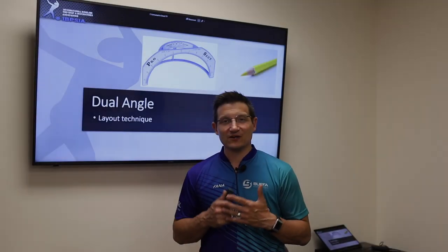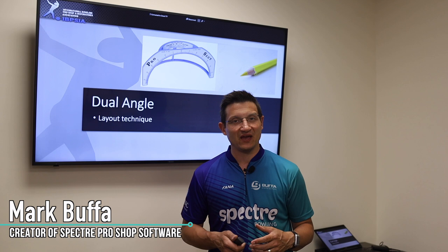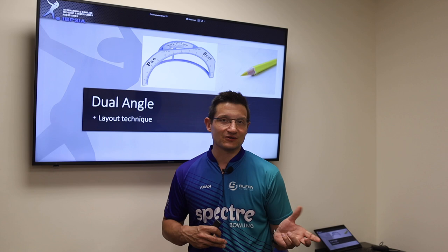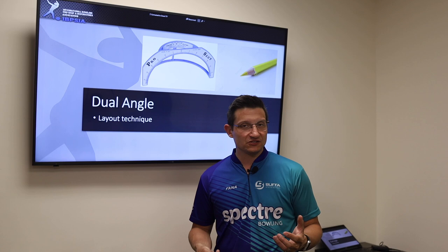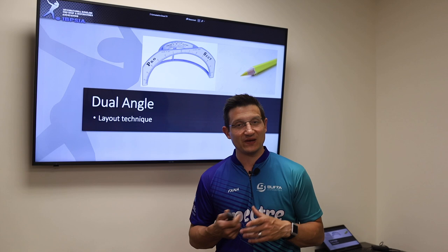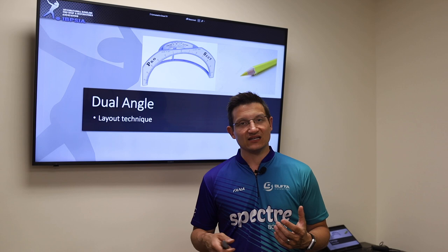Next up we're going to be talking about different layout techniques based on a bowler's positive axis point. We will not be discussing how to make up these numbers or these layouts. You can always look at the manufacturer's websites for suggested layouts if you want to know certain ball motion. We will also offer some suggested layouts based on axis rotation at the end. We will be covering all the different layout techniques for one-handed and two-handed players.